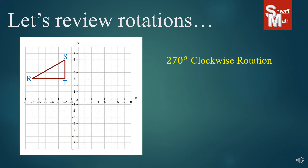Now a 270 degree clockwise rotation — that's three quadrants around. So we're going to be taking it around this way, and it'll end up here in the third quadrant around. All of the prime notations are there as well.